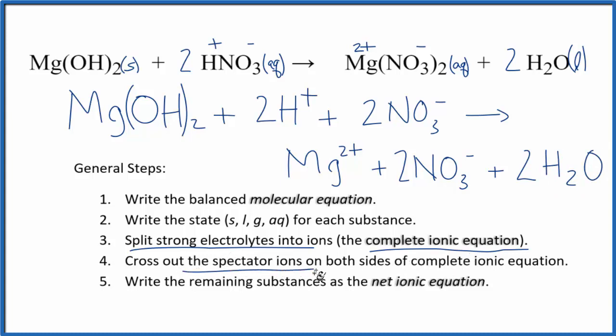Now we can cross out the spectator ions. These are ions that are on both sides of that complete ionic equation. Effectively, they haven't changed. And when I look at it, I see I have these 2 nitrate ions here in the reactants and 2 in the products. I can cross those out. Everything else is unique.